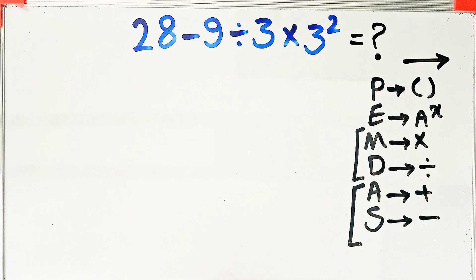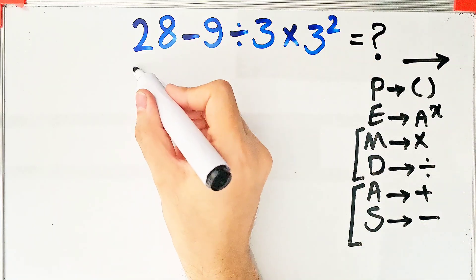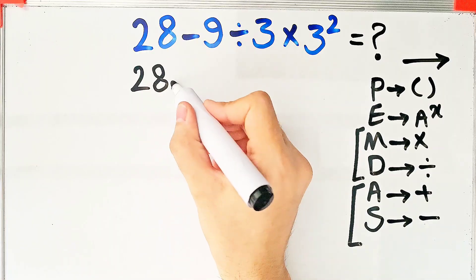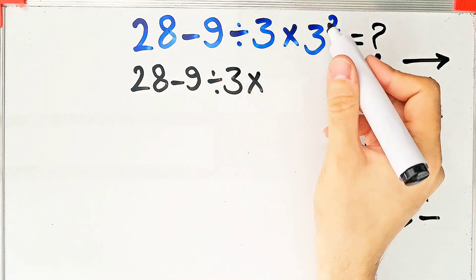In this question, first we simplify the exponent. We have 28 minus 9, then divided by 3, then times 3 to the power of 2, which equals 9.